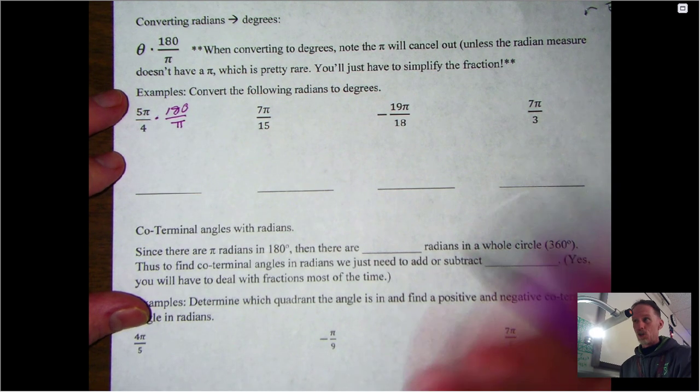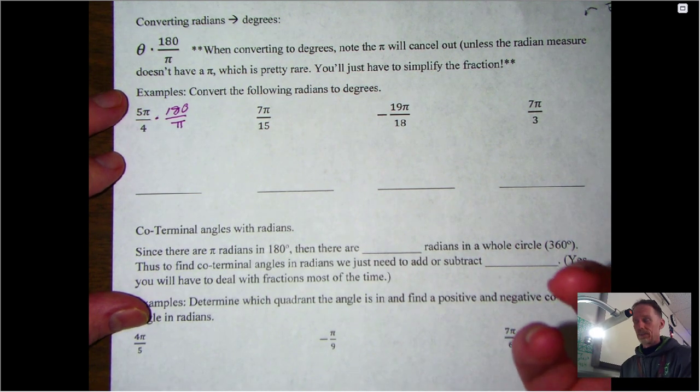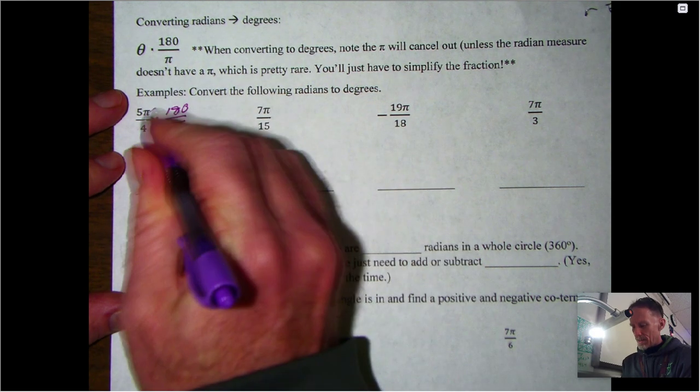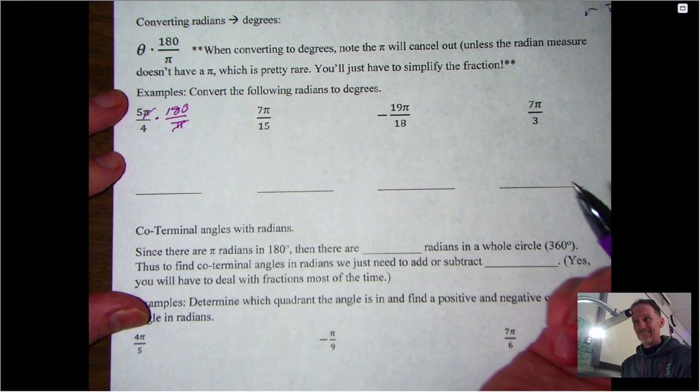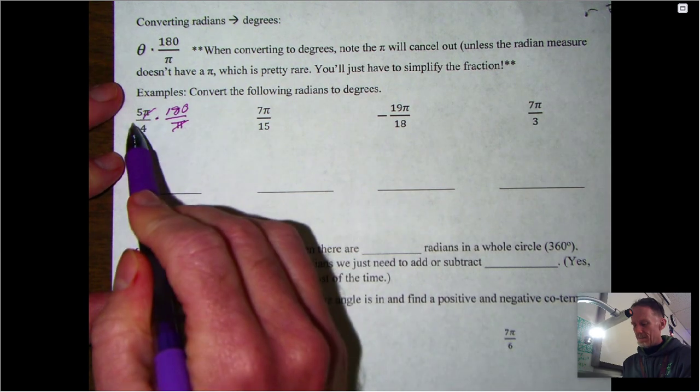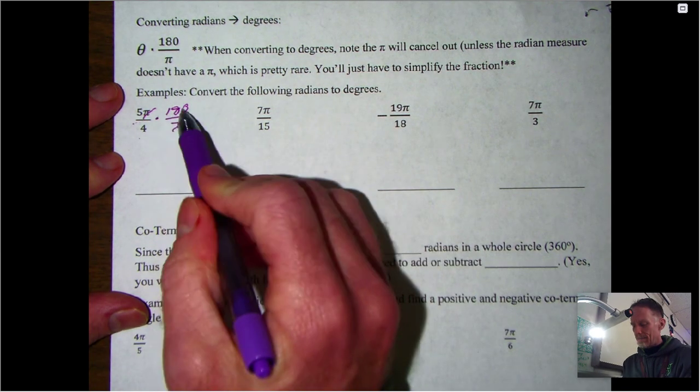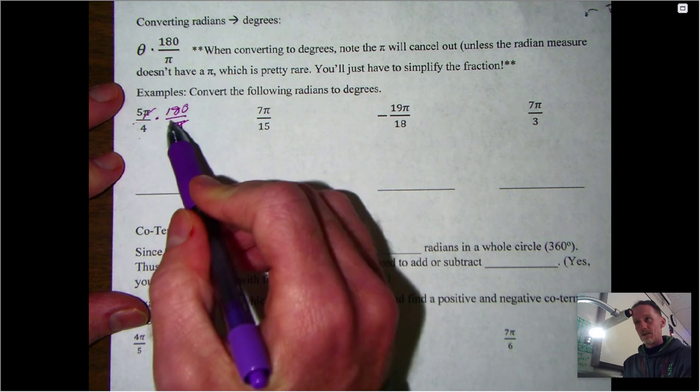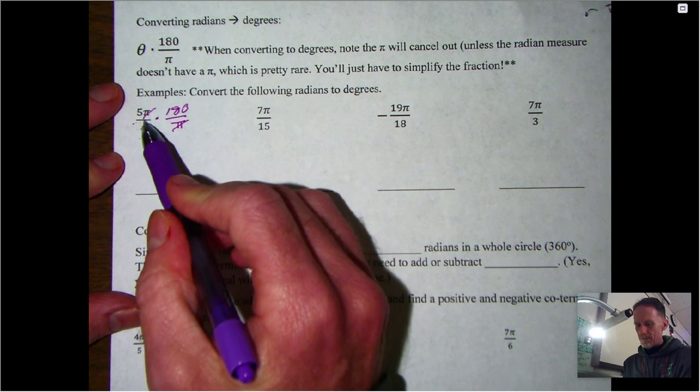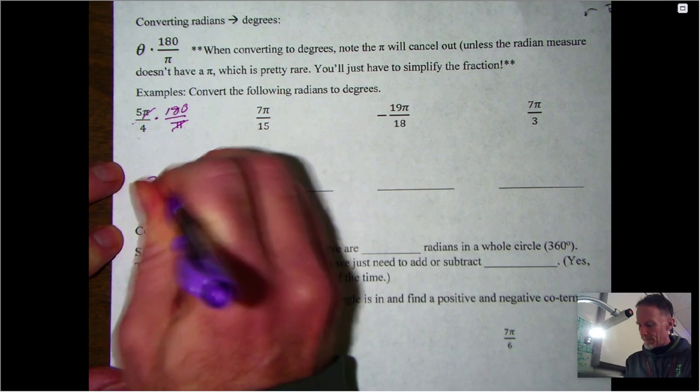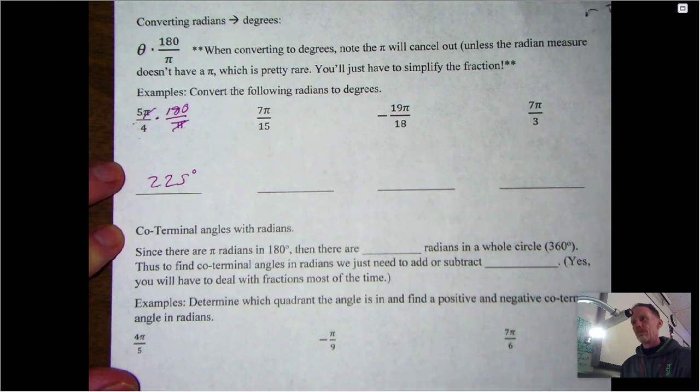Again, simplify the fraction. Notice the πs just cancel out. So 5 times 180 divided by 4, or you can do that as 180 divided by 4—do that part first, make the number smaller, multiply by 5—either way, this would come out to be 225 degrees.